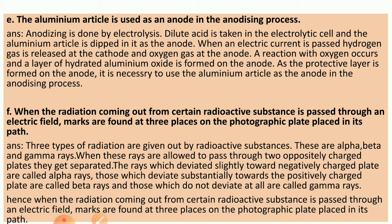F: When radiation coming out from certain radioactive substances passes through an electric field, marks are found at three places on the photographic plate placed in its path. Answer: Three types of radiations are given out by radioactive substances: alpha, beta and gamma rays. When these rays are allowed to pass through two oppositely charged plates, they get separated. Alpha rays deviate slightly towards the negatively charged plate, beta rays deviate towards the positively charged plate, and gamma rays do not deviate at all. Hence, marks are found at three places on the photographic plate.